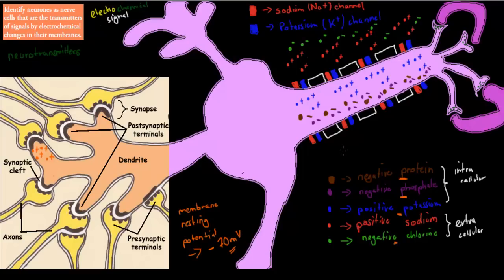At minus 70 millivolts, there's slightly more negative charge than positive charge inside the cell. Inside, we have negative proteins and negative phosphates, plus positive potassium — so it's more negative compared to the outside, where we have negative chlorine and some positive sodium. The resting potential of minus 70 millivolts means there's more negative charge inside than outside. That's important for understanding how this works.